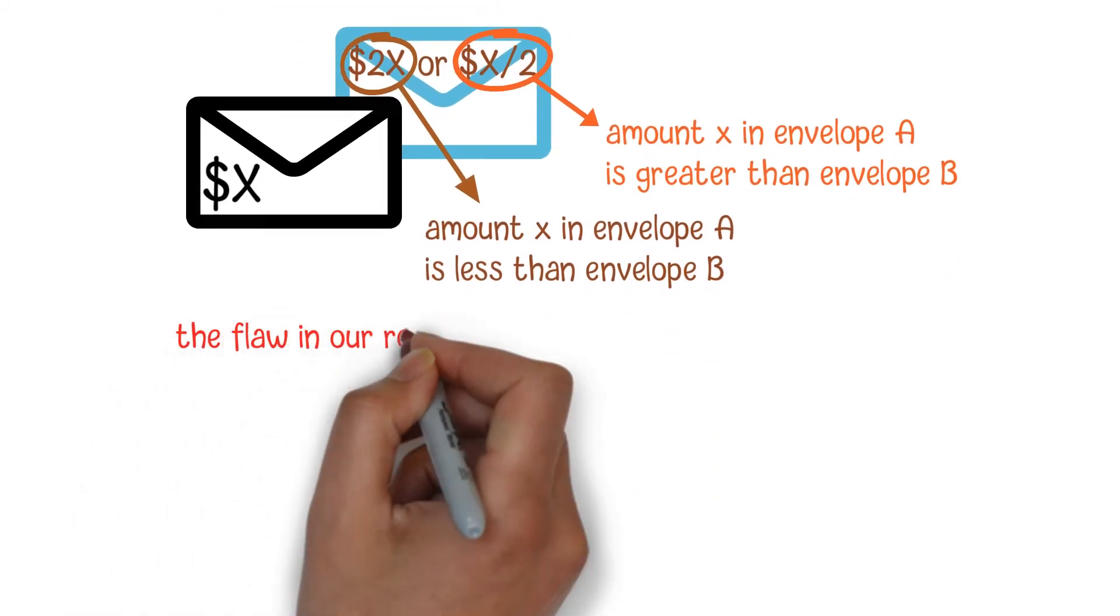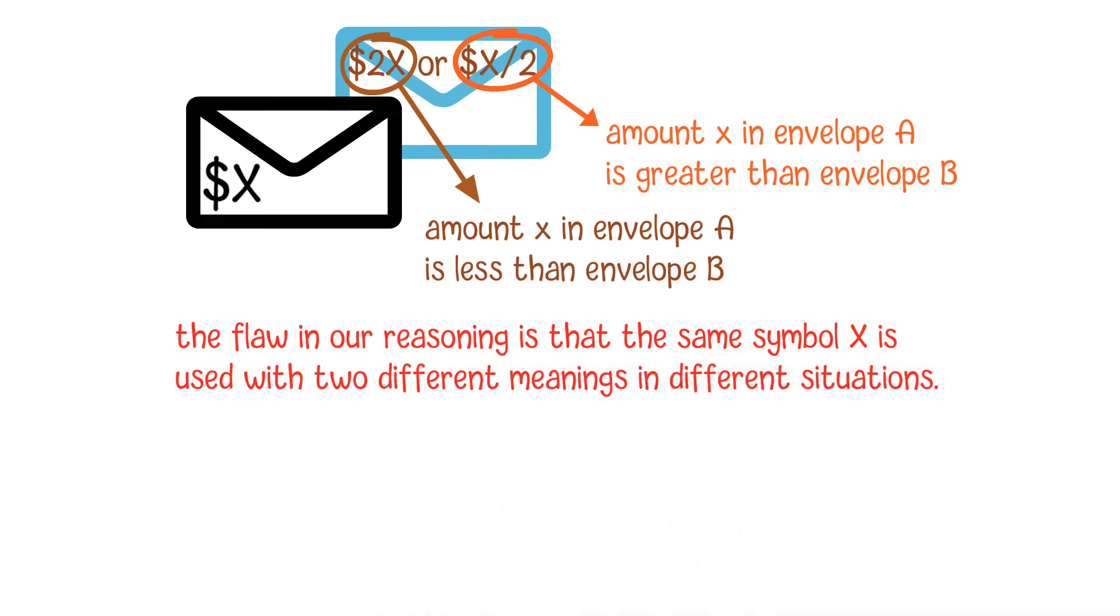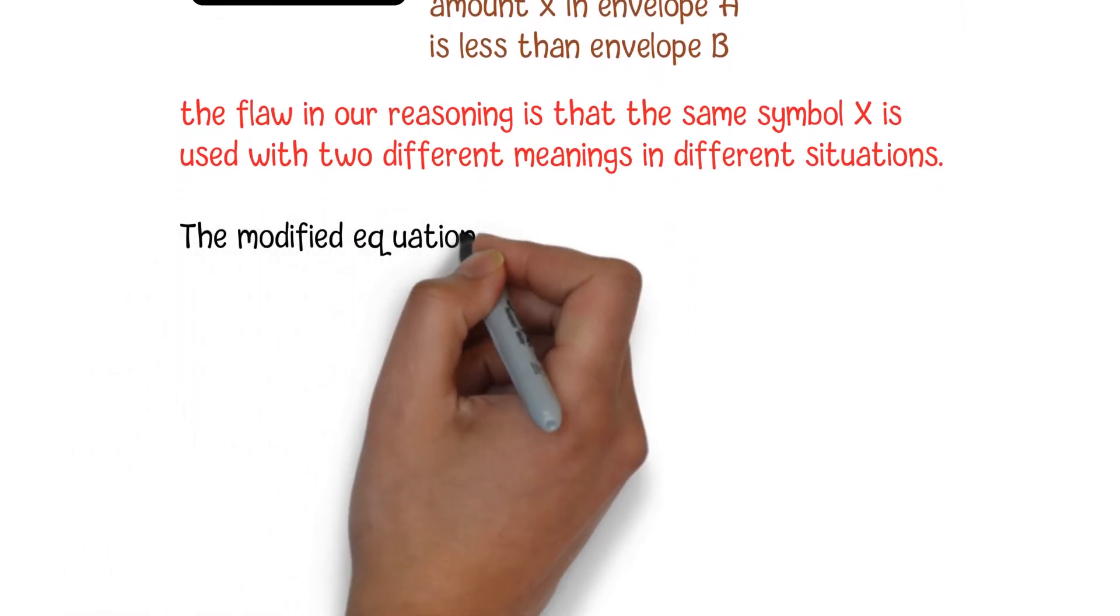So the flaw in our reasoning is that the same symbol X is used with two different meanings in different situations. However, they have been used together in one equation and are assumed to have the same value. The modified equation should be like this: